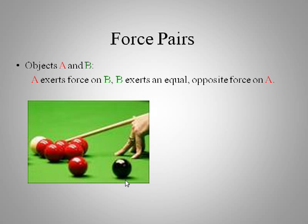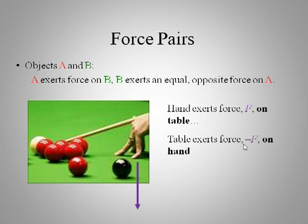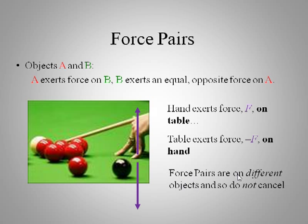So here's some billiards going on. Let's talk about force pairs here. So the hand exerts a force, call it F, on the table because the hand is on the table. So there it is. This force is on the table. The table exerts a force opposite and equal on the hand. So this force is on the hand. Now we need to distinguish that from what we just saw before. But in this case, the force pairs are on different objects. One is on the table. The other is on the hand. So these two do not cancel each other. Only forces on the same object can cancel each other.